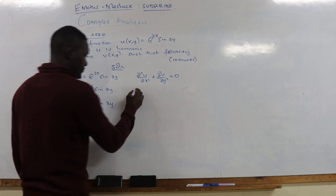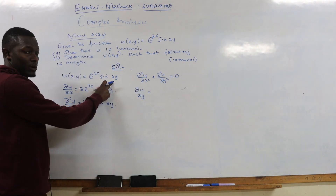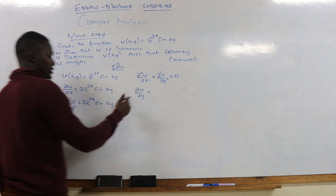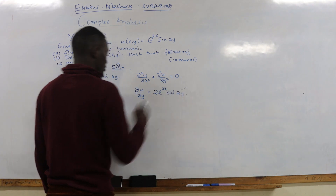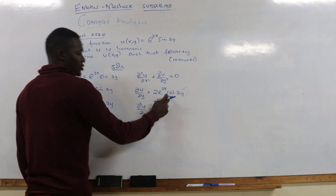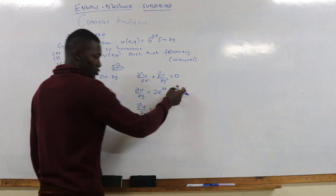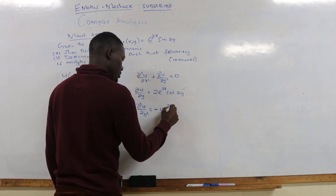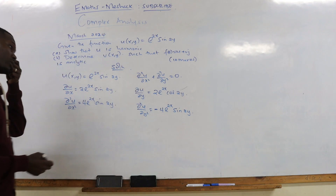Now differentiating with respect to y: du/dy — when you differentiate sine you get cosine, so we get 2e^(2x) cosine(2y). Differentiating a second time with respect to y: cosine becomes negative sine, and multiplying by 2 gives d²u/dy² = -4e^(2x) sine(2y).